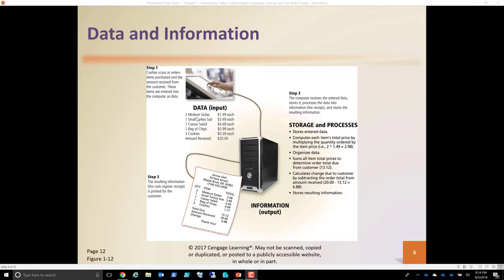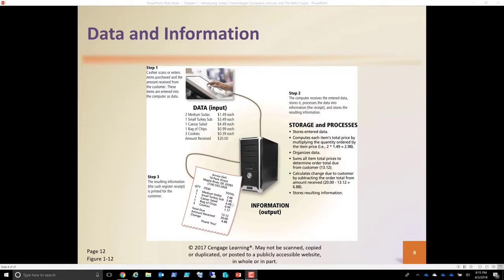Let's take a quick look at how information is passed, stored, and processed in the computer. First we have to get information into the computer — we call that input. In our example here, a cashier either scans or enters items using a touch screen, which could be a keyboard or a touch screen programmed with common items. All of those items are stored in the computer in temporary memory, and it then accesses a database to find the current price of the items. So we've told it we have, say, one small turkey sub.